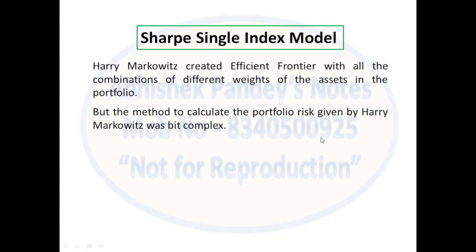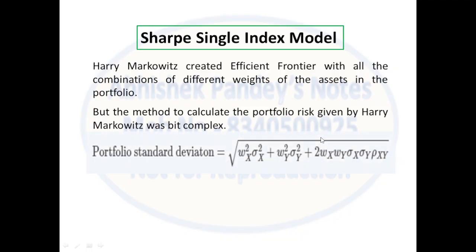This was the background of Modern Portfolio Theory. This complex formula was given by Harry Markowitz to calculate the portfolio risk, which is calculated by means of variance — also known as standard deviation. The portfolio standard deviation formula given by Markowitz in MPT is shown here. We have taken the example of two stocks, which is why weights of two stocks Wx and Wy have been taken into consideration. But suppose there are more than two stocks in the portfolio — this formula will keep on increasing and become very large.